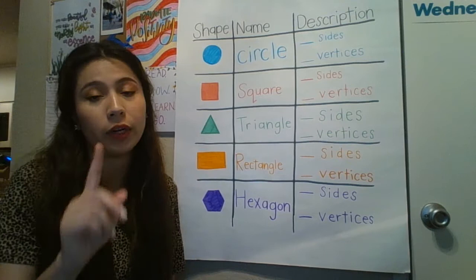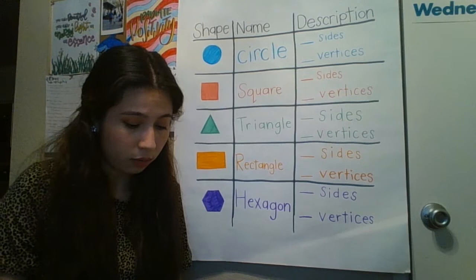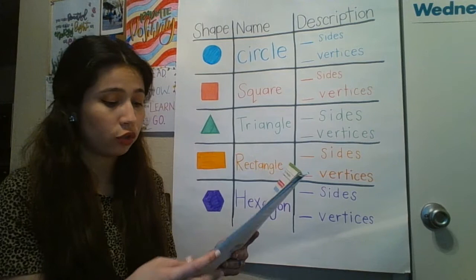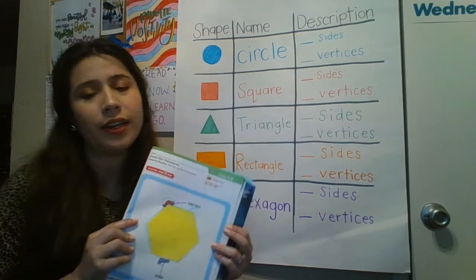So before we get to our chart here, I want to talk about hexagons because we didn't really get a chance to talk about hexagons too much before we left school. So in our chapter 9 math book — chapter 9 at the top — if you turn to page 393, we have a yellow hexagon here.